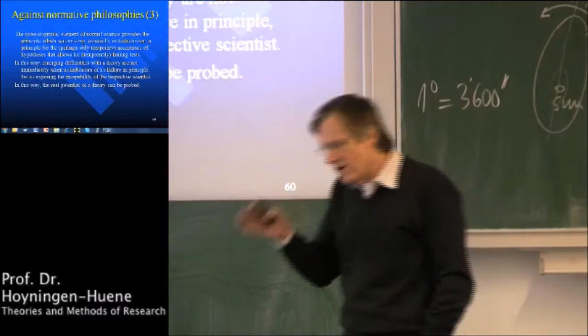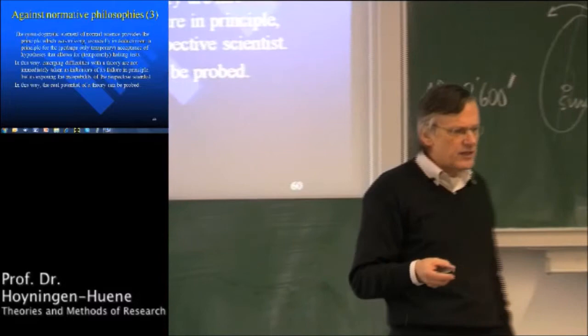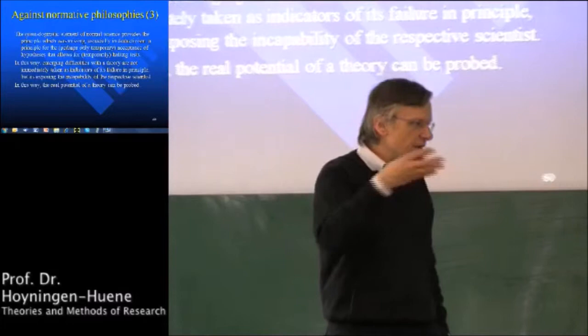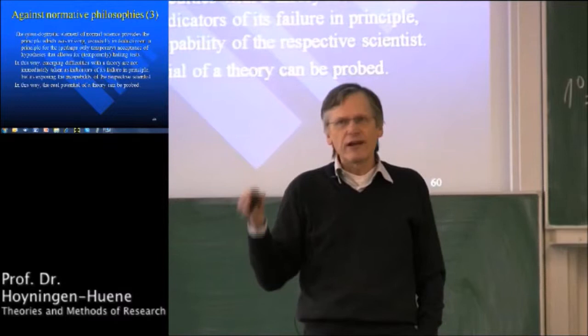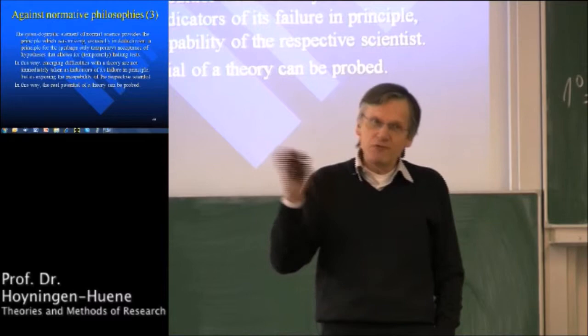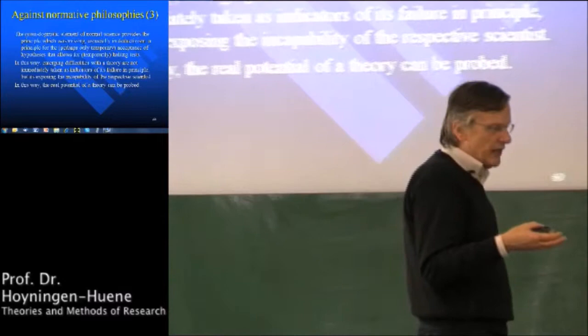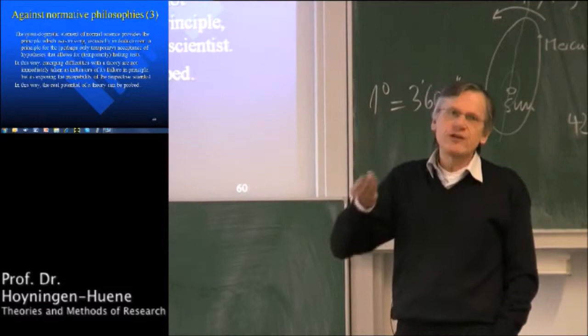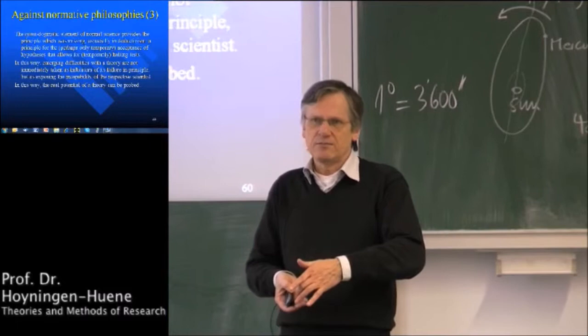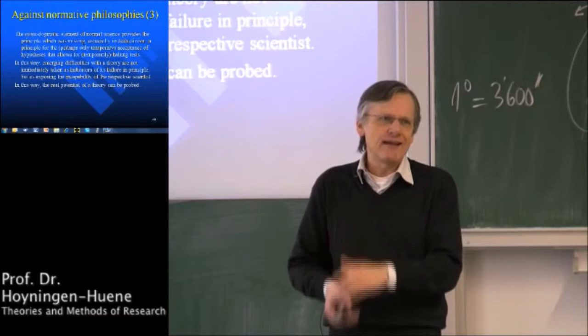The really good theories invented in the history of science — like classical physics, Darwinian theory, or the theory of chemical bonds — have an immense potential; it's incredible, almost a miracle, how strong they are. They may not be right in the end, but first you have to understand what these theories are able to do. You want to know the real potential of a theory before you give it up. So you better stick to a good theory as long as possible, and only give it up when it's absolutely unavoidable.